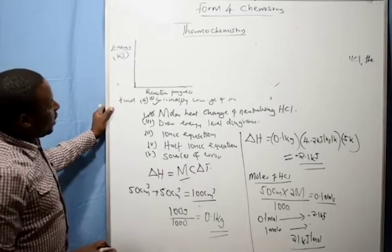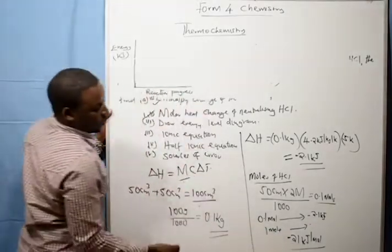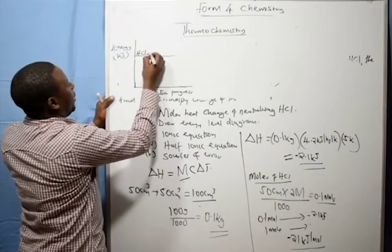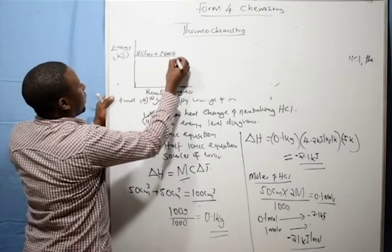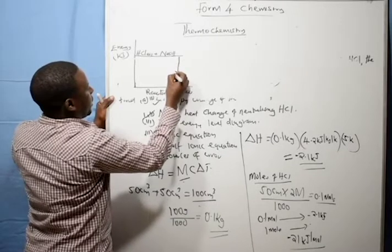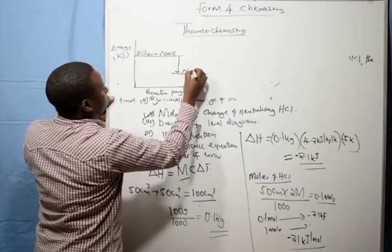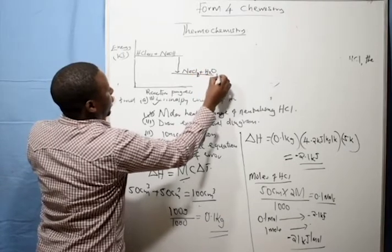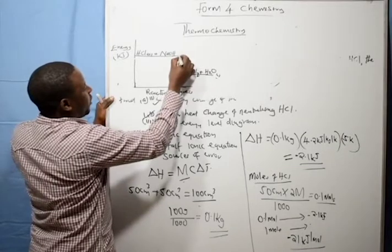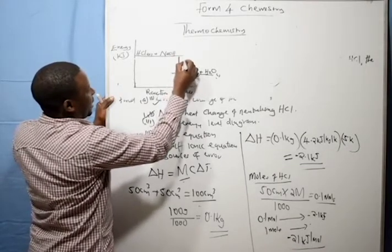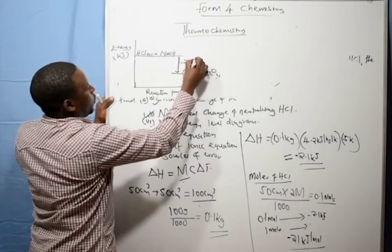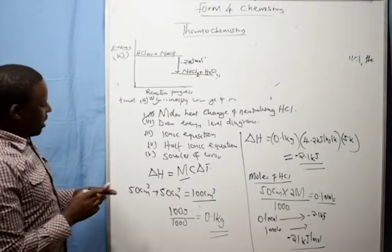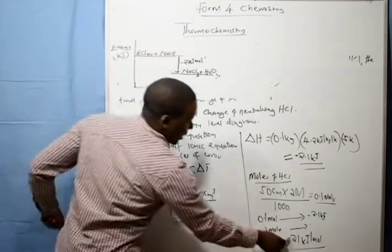Then our reaction is an exothermic reaction that has a negative figure. So therefore this is HCl plus sodium hydroxide. The product is sodium chloride plus water aqueous. Then the enthalpy change is that which is negative 21 kilojoules per mole. That is how you do an energy level. The arrow points downwards since energy is being lost. That is how we have a negative sign.